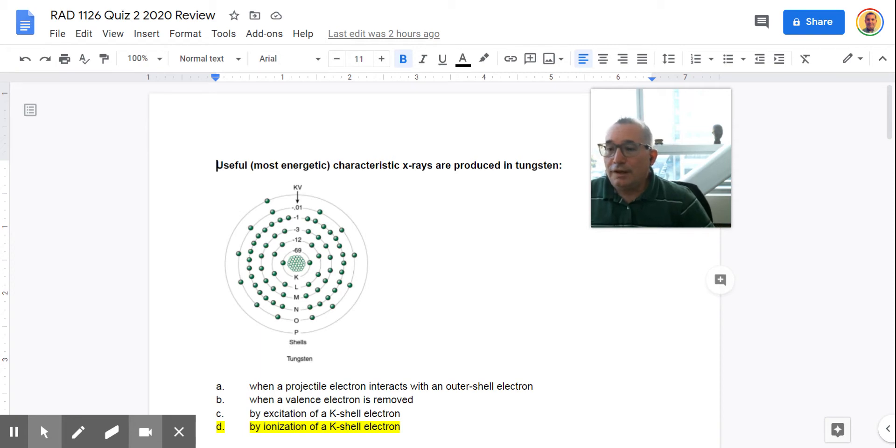First one, useful or most energetic characteristic x-rays produced. So we're talking about the most powerful x-rays in terms of energetic. Those would be by an ionization in the K-shell. So I added this image. If one of these two are vacated by an incoming electron from the cathode, as would happen in a characteristic interaction, one of these flies off. And then a lower shell electron, either from the L, which is 12, or the M, which is minus 3, would be subtracted from 69. So if it was minus 12, it would be 66. 69 minus 12.